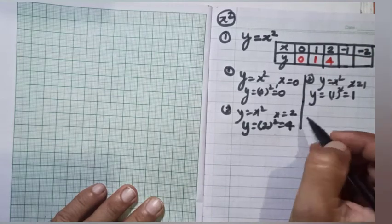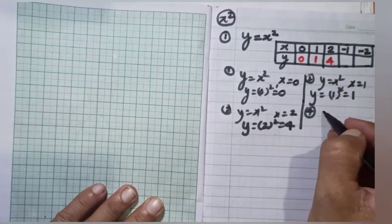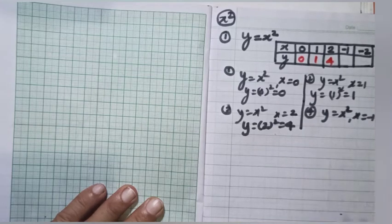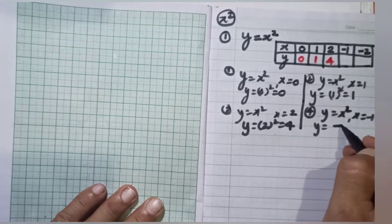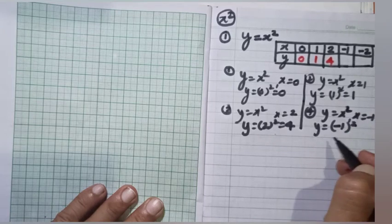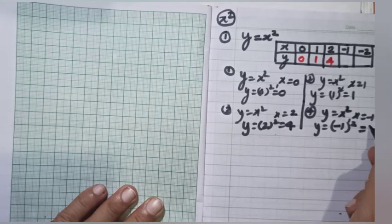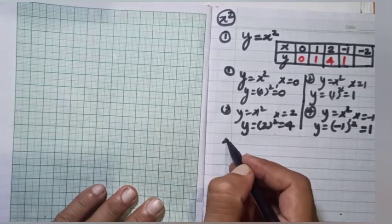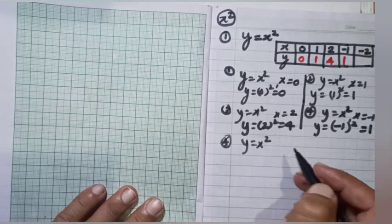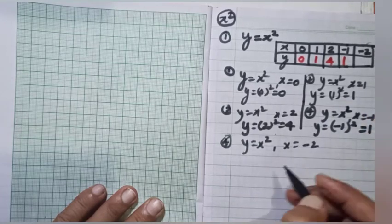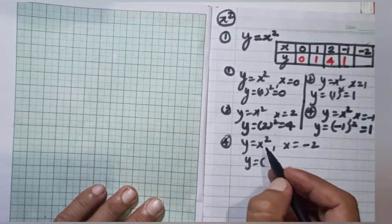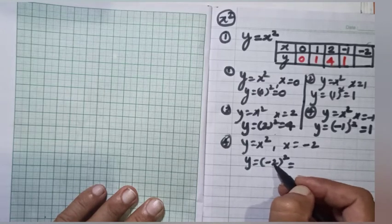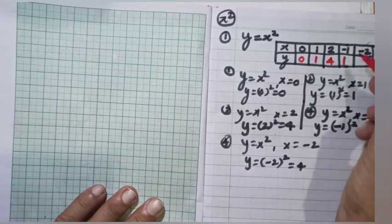For x equal to minus 1, we write minus 1 squared. Since squaring any negative number gives a positive, we get 1. Similarly, for x equal to minus 2, minus 2 squared gives a positive value: 4. So we write 4 here as well.